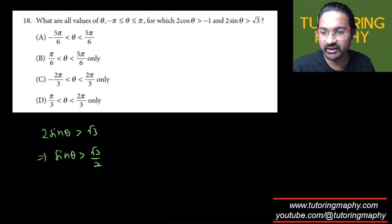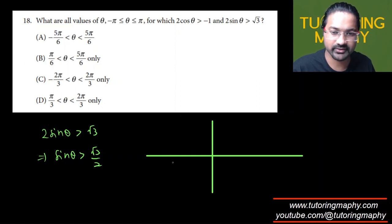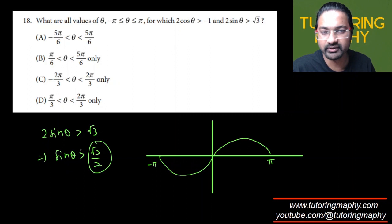Well, if you ask me I'll just draw a graph because making a graph will be really helpful for us. Negative pi to pi, sine is going to look like this. This is pi, this is negative pi, and they need it to be greater than root 3 over 2, and can you tell me where is sine at which angle is sine root 3 over 2?